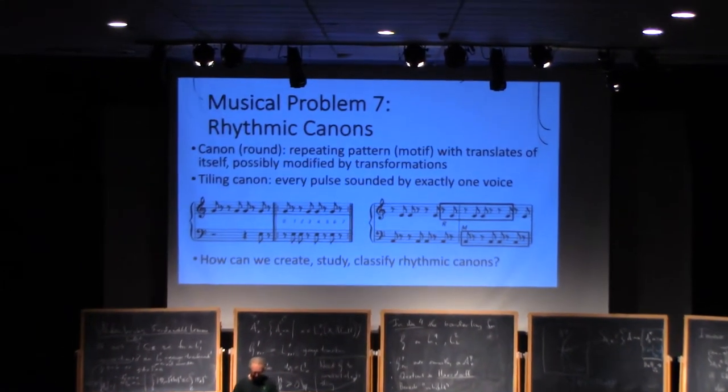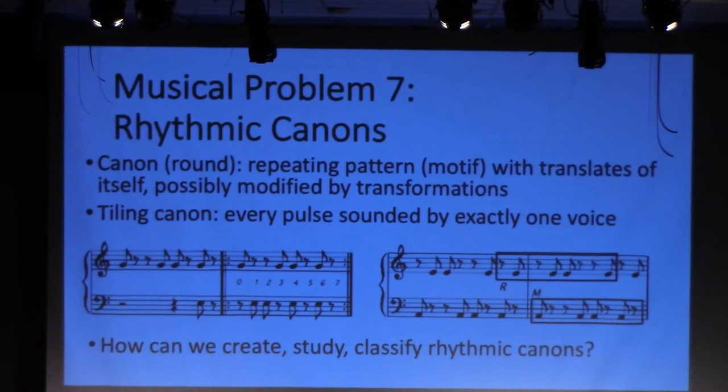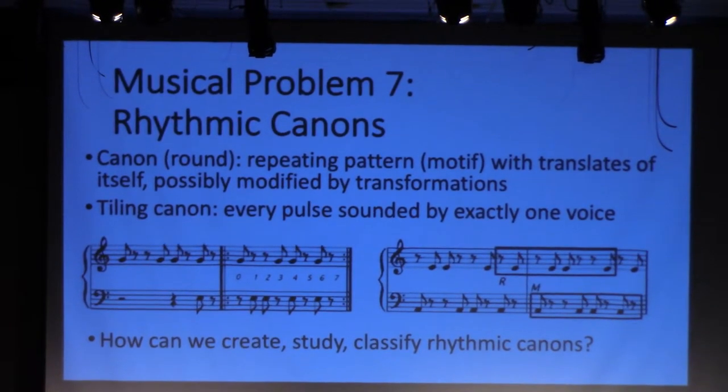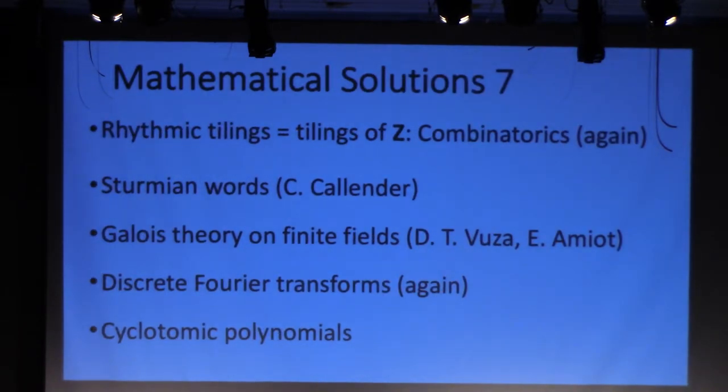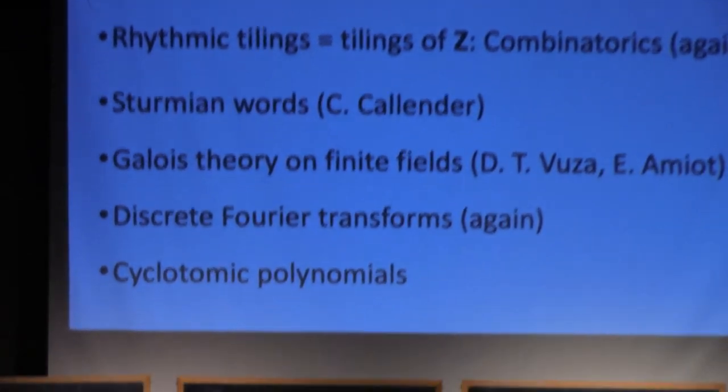A canon is a motif repeated with translates of itself. On the right, a motif and a translate of its retrograde form a tiling canon, with every pulse sounded by exactly one part. Composers make heavy use of tiling canons. Classifying rhythmic tilings is another big industry in mathematical music theory.